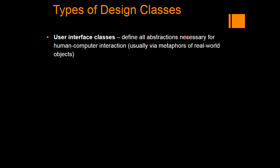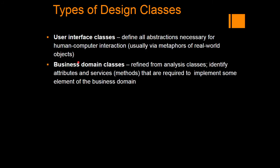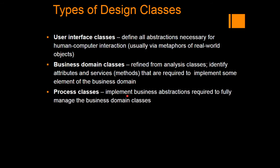The types of design classes are as follows. The user interface class defines all the abstraction necessary for human-computer interaction, usually via metaphors of real-world objects — for example, client requests and server responses. The business domain class is refined from analysis classes and identifies attributes and services required to implement elements of the business domain, addressing how data and attributes can be defined to solve the business model under consideration.